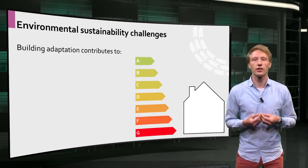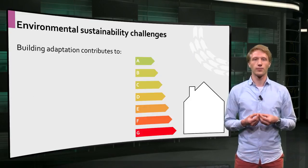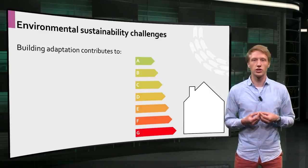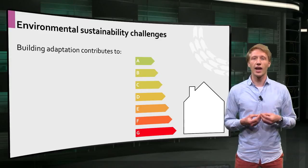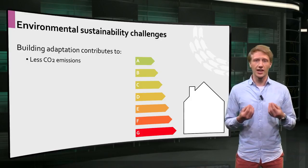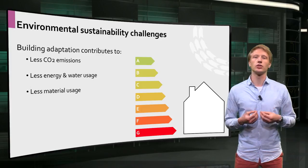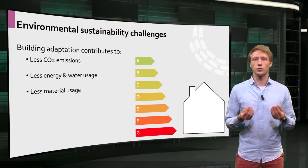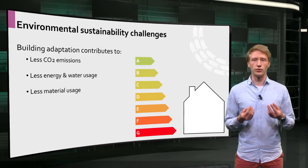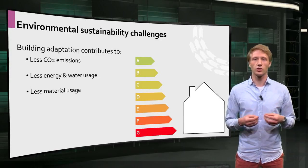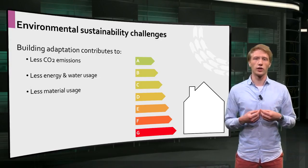Building adaptation is inherently environmentally sustainable. By adapting buildings, we directly deal with some global sustainability challenges like combating climate change and becoming more energy and resource efficient. By adapting buildings, less CO2 emissions occur, less energy and water is used, and less materials are extracted from our earth. For example, adapting buildings with environmentally friendly features makes them more future-proof. For instance, installing solar panels and water recycling systems reduces building energy and water usage.